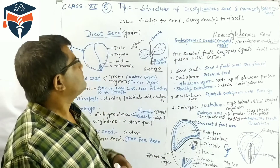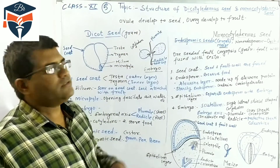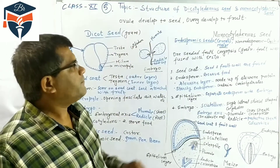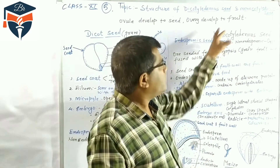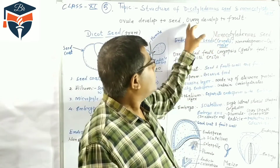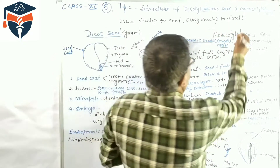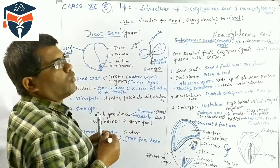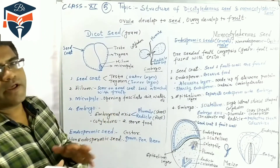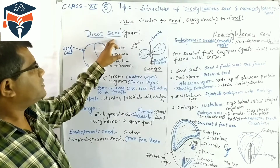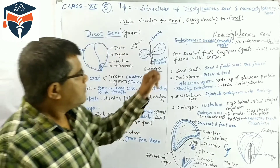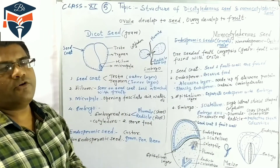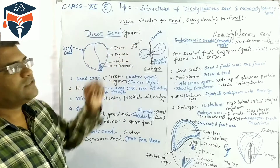Our primary knowledge is that ovule develops into seed — the seed is a mature ovule — and the ovary develops into fruit. We have two types of seeds: dicotyledonous seeds, called dicot seeds, and monocotyledonous seeds. First, we are going to discuss the structure of the dicotyledonous seed, and I have taken the gram seed as the example, which is discussed in our Class 11th NCERT book.